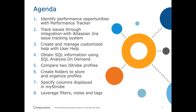I'm going to start with the agenda for today. Item one: identify performance opportunities within Performance Tracker. Item two: track issues through integration with Atlas and JIRA issue tracking system. Item three: create and manage customized help with user help. Item four: obtain SQL information using SQL analysis on demand. Item five: compare two iStrobe profiles. Item six: create folders to store and organize profiles. Item seven: specify columns displayed in myStrobe.